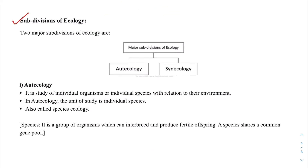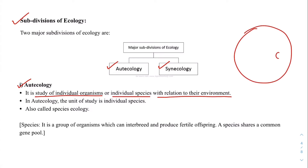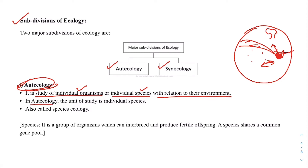Now we have the subdivisions of ecology. Two major subdivisions are autecology and synecology. Autecology is the study of individual organisms or individual species with relation to their environment. For example, studying one type of species on the island — what type of interaction it has with its environment: the soil, water, trees. In autecology, the unit of study is individual species. It is also called species ecology.